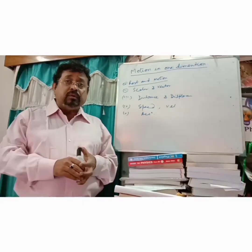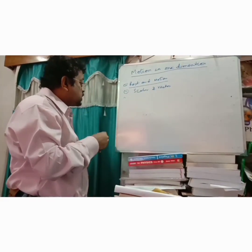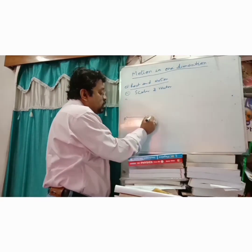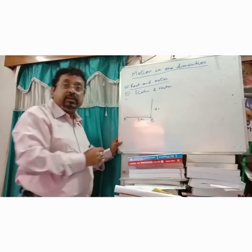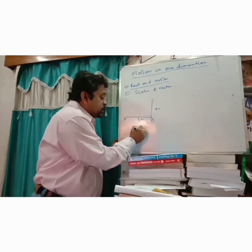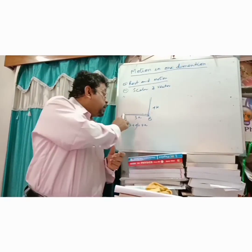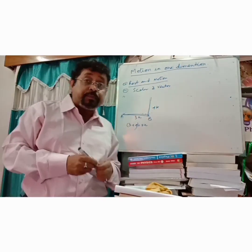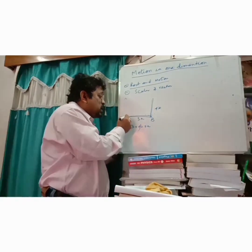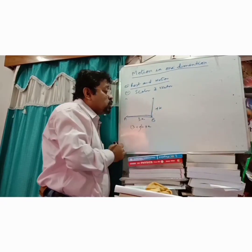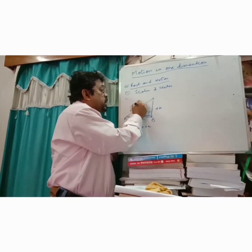Now, what is distance? Suppose a person is standing at point A and goes 3 km to B, then moves 4 km further. The distance covered is 3 plus 4, which is 7 km. Distance means the actual path the particle traverses. But displacement means the minimum distance between the initial and final position. If the angle is 90 degrees, using the Pythagoras theorem: root of 3 squared plus 4 squared, which equals 5 km.